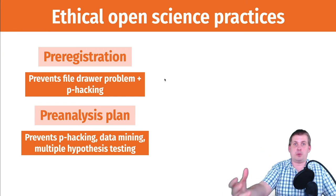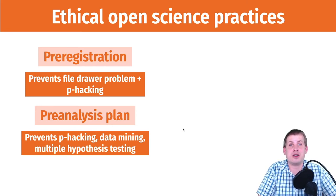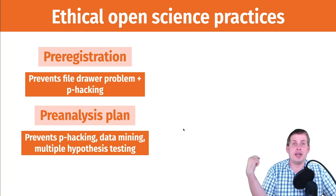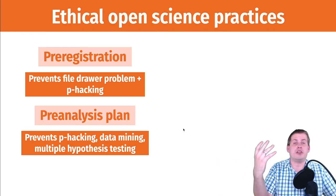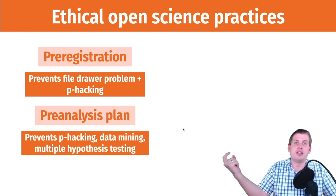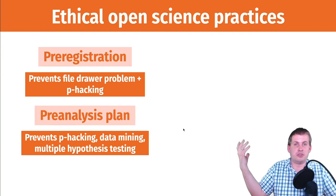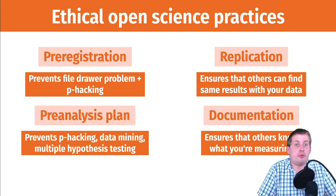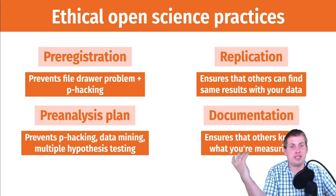When you pre-register an analysis you're posting on the internet what you think is going to happen before you do it. The pre-analysis plan is more specific — generally with code — where you specify all the exact models you're going to run, all the variables you're going to create, and outline the entire analysis. This is why you use fake data: before you collect real data, you invent fake placeholder data to make sure all the plumbing of your models works. Then you post that and say: here's what I'm going to do to analyze my data.